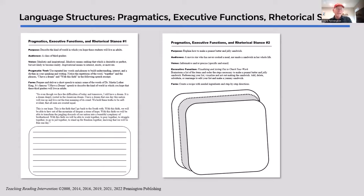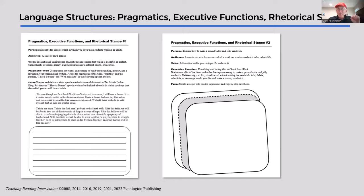Executive functions refer to what are called the self-regulatory processes. There are things not particularly related to reading — such as goal setting — that are important study skills, but specifically with respect to reading, executive skills such as reading stamina, flexibility, working memory, and metacognition are essential to accessing text. Even though they're not in Scarborough's rope, we need to teach them.